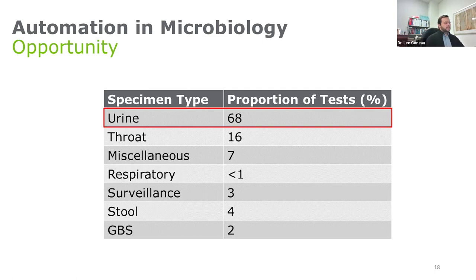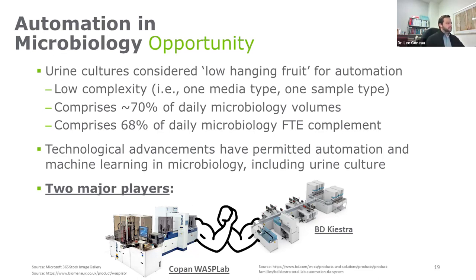Looking at our proportion of tests in my lab, we really saw that there was an opportunity specifically with urine culture. The proportion of urine culture done by Dynacare is almost 70% of our total volume, which would be wonderful to automate. We really considered this low-hanging fruit for automation for a few reasons: it's a low-complexity sample type — you always get one sample type, urine, planted on one type of media. It comprises a high proportion of our daily microbiology volumes and therefore our high staff complements. And there have been technological advancements that have permitted automation and machine learning to be applied to urine culture.